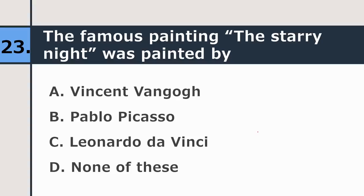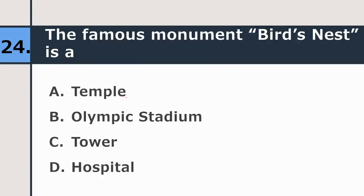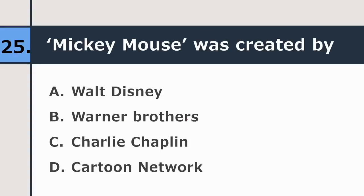Twenty-third question: the famous painting Starry Night was painted by Vincent van Gogh, Pablo Picasso, Leonardo da Vinci, or none of these? The correct answer is Vincent van Gogh. Twenty-fourth question: the famous monument Bird's Nest is a temple, Olympic stadium, tower, or hospital? It is an Olympic stadium located in China. Twenty-fifth question: Mickey Mouse was created by Walt Disney, Warner Brothers, Charlie Chaplin, or Cartoon Network? The correct answer is Walt Disney.